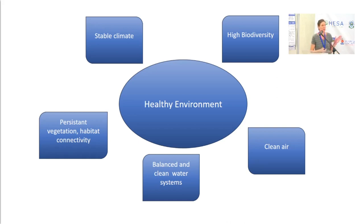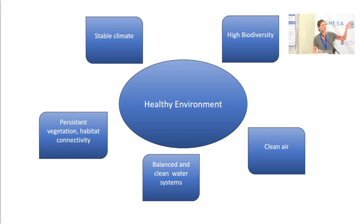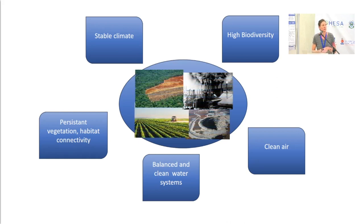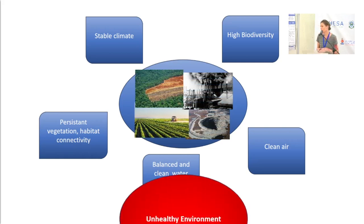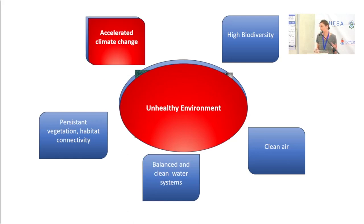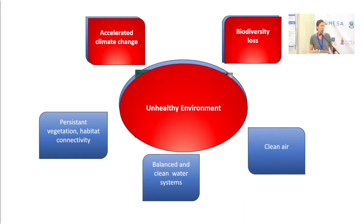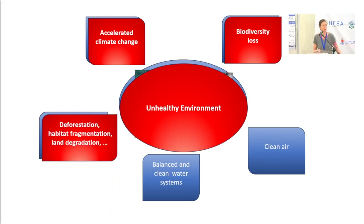A healthy ecosystem can be reflected through a stable climate, high biodiversity, persistent vegetation, habitat connectivity, and so forth. And human cost pressures, like intensive agriculture, mining, industrialization, and the wood industry, can actually lead to what we can call an unhealthy environment, with accelerated climate change, biodiversity loss, habitat degradation, and forest fragmentation.